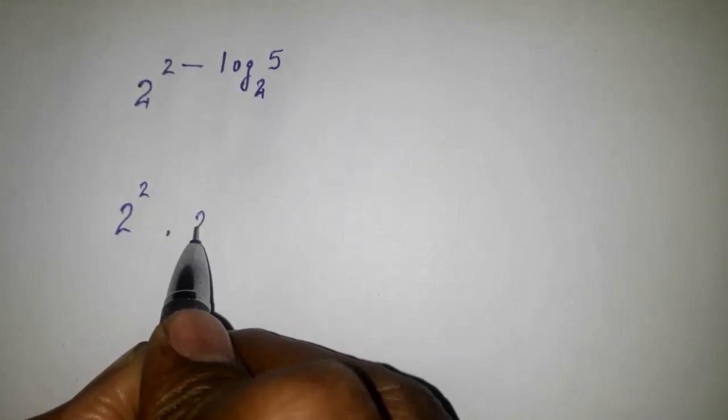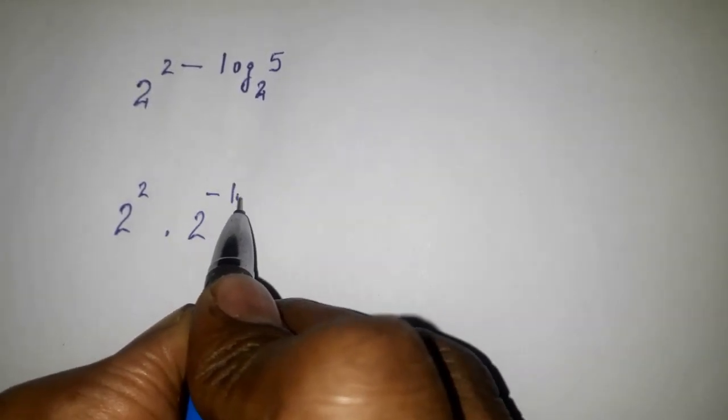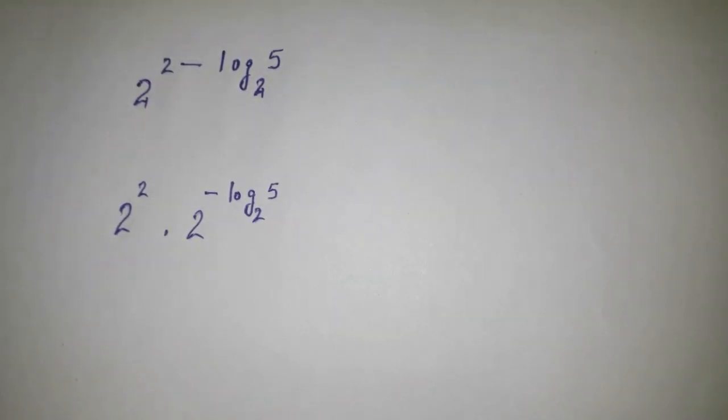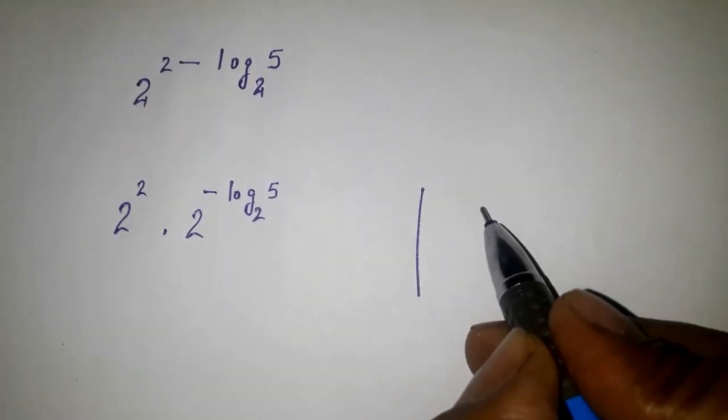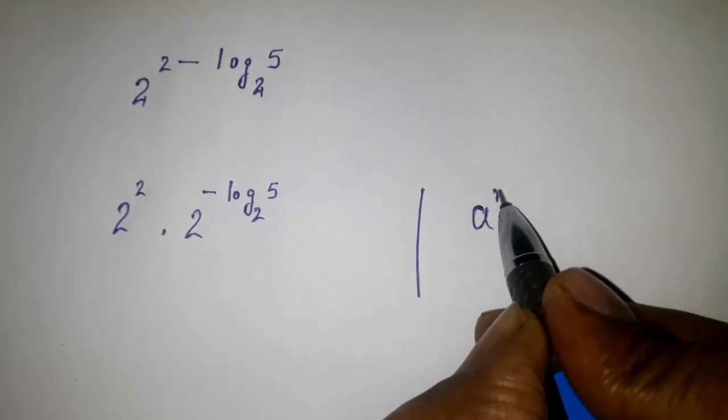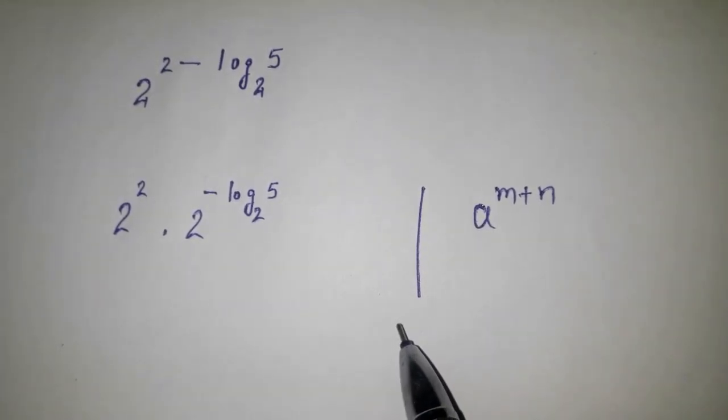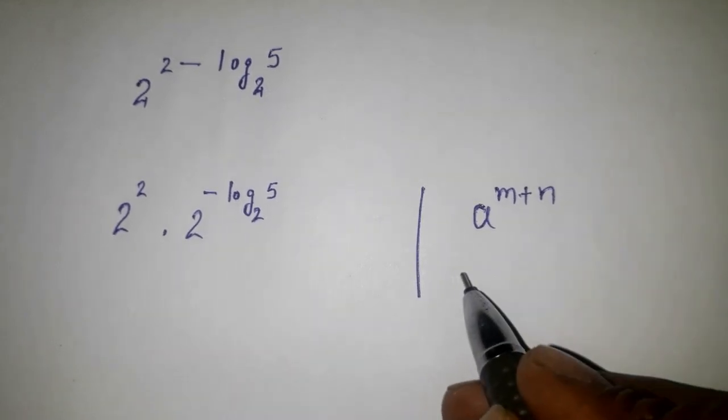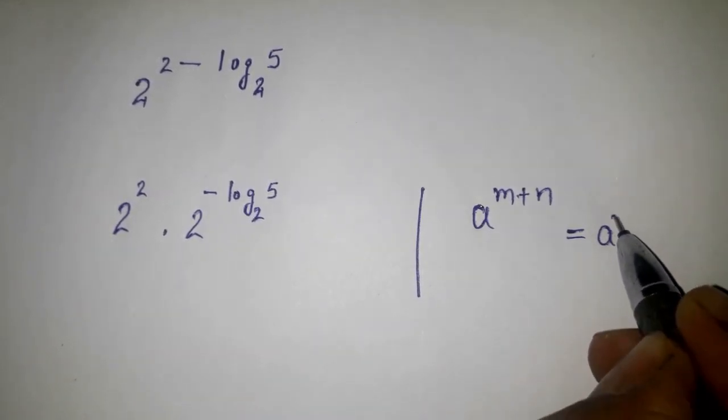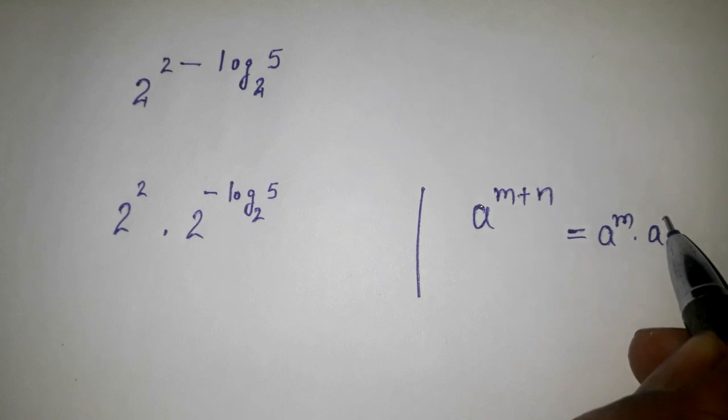In this way: 2 to the power 2 into 2 to the power minus log 2 of 5. We have this identity a to the power m plus n, so I'm just going to use this identity over here: a to the power m and a to the power n.